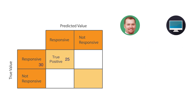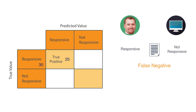Now let's look at another document. This document has a true value of responsive, but the machine predicted that the document is not responsive. We call this a false negative. Let's say that there are five of those in the 100. We will put five in the false negative quadrant of the confusion matrix.